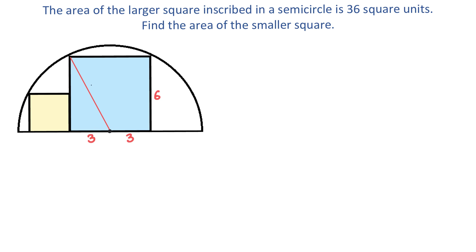Let's use letter r to represent the hypotenuse, because this is also the radius of this circle. Then according to the Pythagorean theorem, r squared equals 6 squared plus 3 squared. 6 squared is 36, 3 squared is 9, then 36 plus 9 is 45.